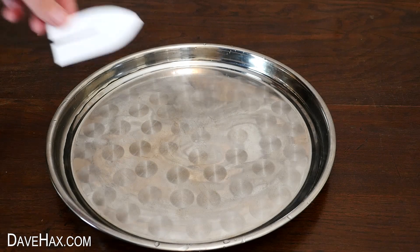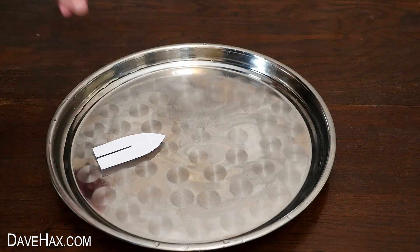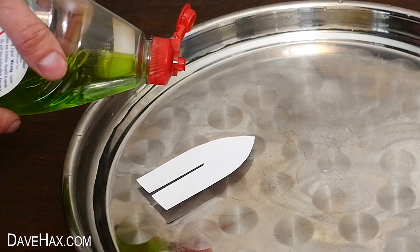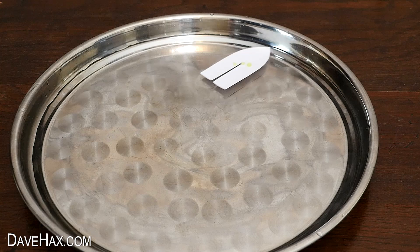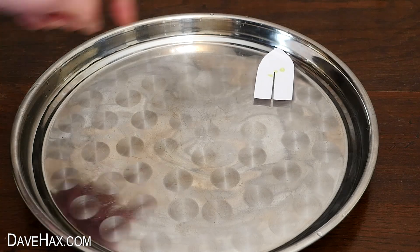To propel the boat we're only going to be using washing up liquid. Place the boat onto the water and apply one drop of soap onto the end of the channel in the middle of the boat. The moment the soap touches the water, the boat shoots off. Once it's got to the other side though, it doesn't really come back.